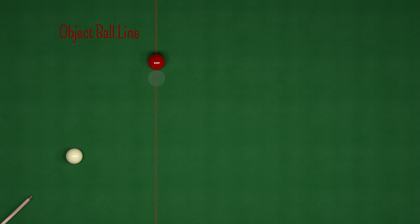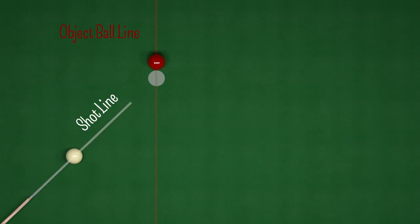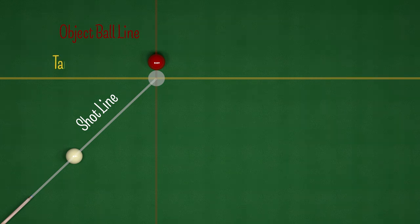If we want the object ball to travel straight up the screen along the red line — which we call the object ball line — then we need to imagine our ghost ball directly behind the red, positioned on that line. We then work out our shot line, which runs from the cue ball straight to the ghost ball. To work out the path of our cue ball after impact, we introduce a third line called the tangent line, which runs through the center of the ghost ball and perpendicular to the object ball line.